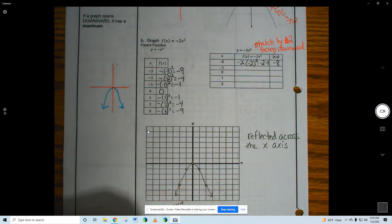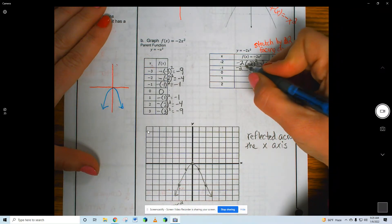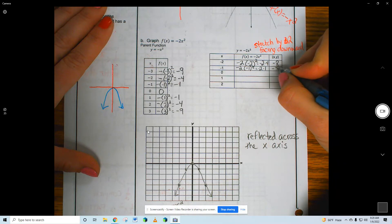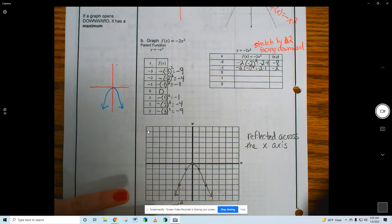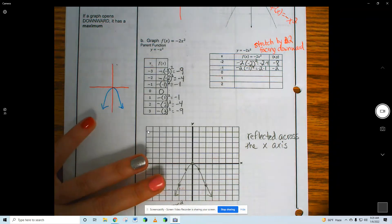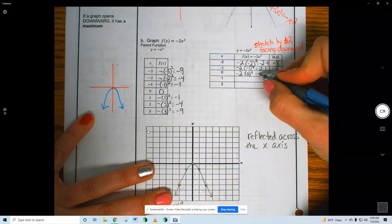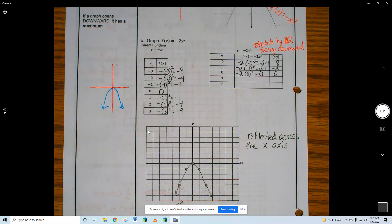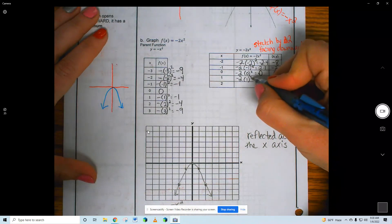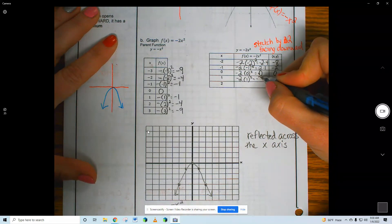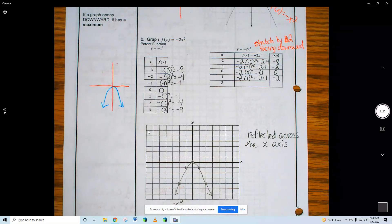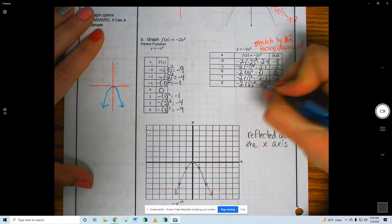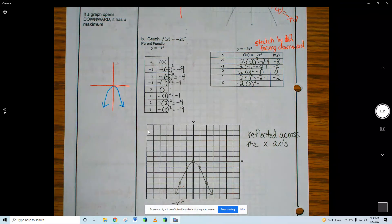All right. So now I'm going to plug in negative 1. Negative 2 times 1. Negative 2 times 0. Negative 2 times 1. Negative 2. Negative 2 times 1 squared is just negative 2. Negative 2 times 2 squared, just plugging in, is what? You guys tell me. Negative 8.